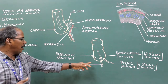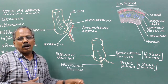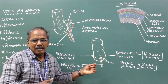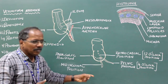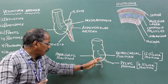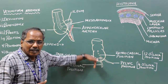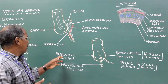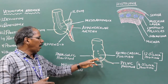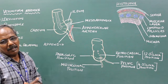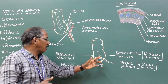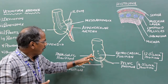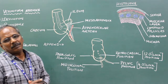Mid-inguinal position or sub-cecal position, also known as the 6 o'clock position. The appendix passes downwards vertically below the cecum. Para-colic position, or 11 o'clock position — the appendix passes upwards behind and lateral to the cecum.